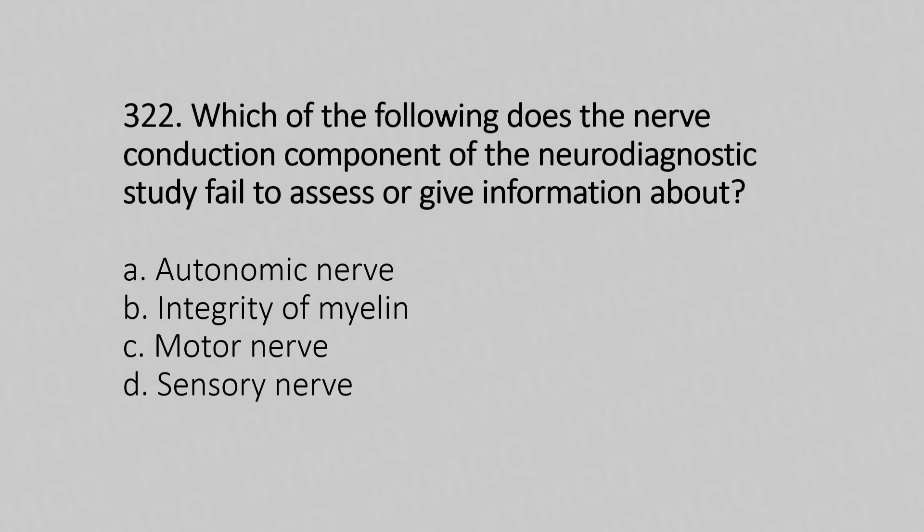Question number 322: Which of the following does the nerve conduction component of a neurodiagnostic study fail to assess or give information about? Option A: autonomic nerve. Option B: integrity of myelin. Option C: motor nerve. Option D: sensory nerve. The answer is option A, autonomic nerve.